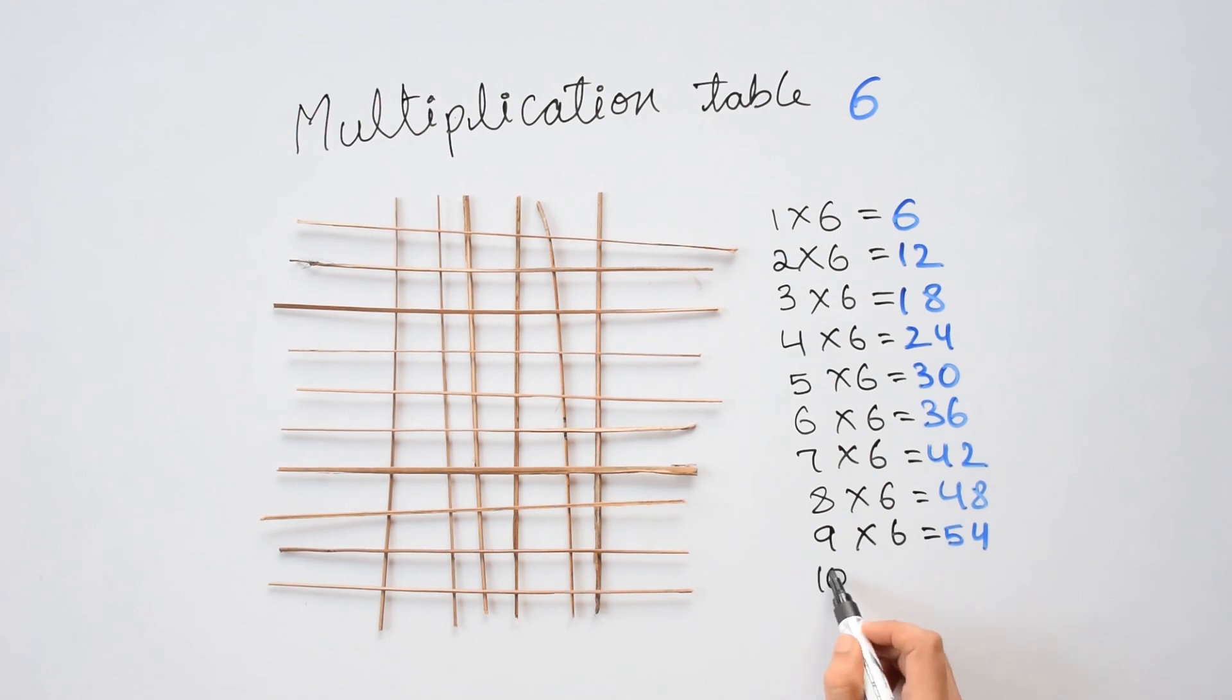Finally, 10 times 6 equals to, till here it's 54, 55, 56, 57, 58, 59, 60. So 10 times 6 is 60.